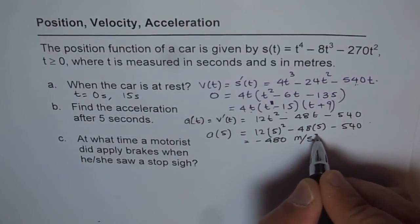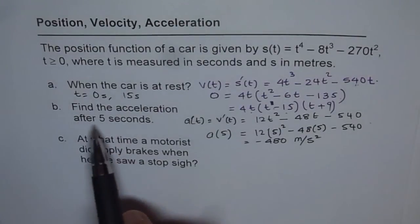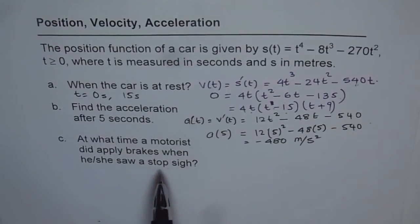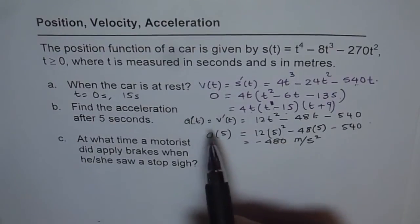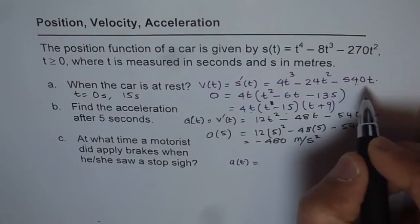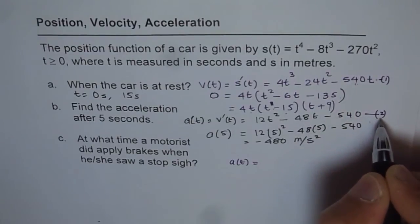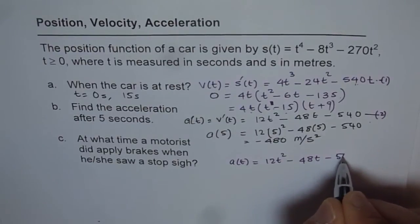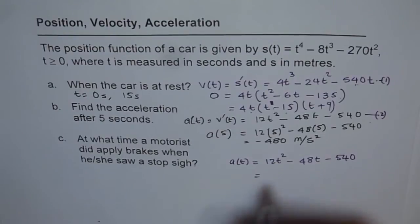It is important to write units in all these cases. Acceleration after 5 seconds, at t = 5, is -480 meters per second squared. For part (c), applying brakes means acceleration is decreasing. We find the zeros of the acceleration equation and analyze when brakes were applied. We analyze a(t) = 12t² - 48t - 540.